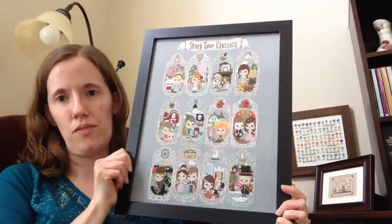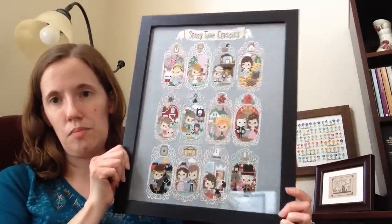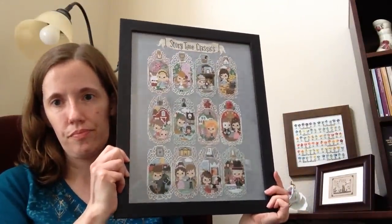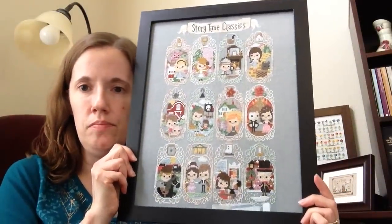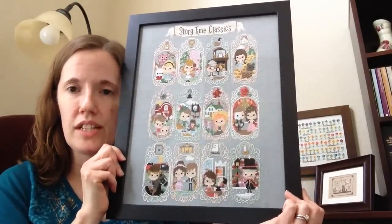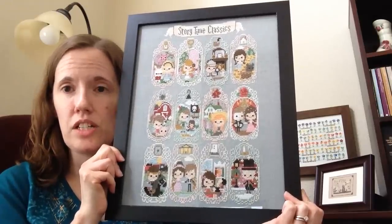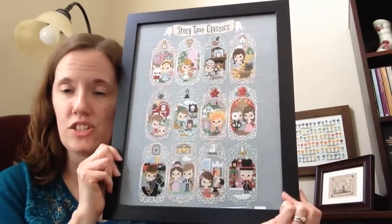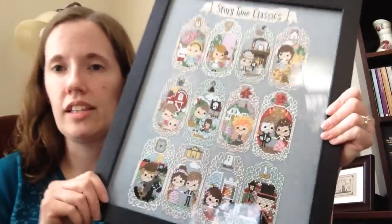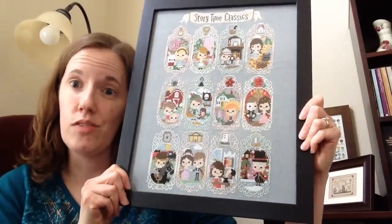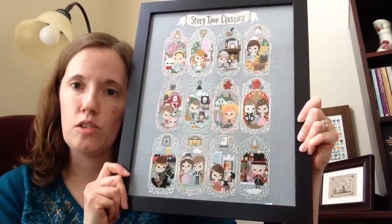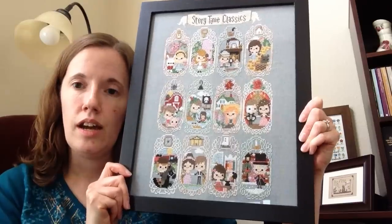Here is Story Time Sampler. This is an eleven by fourteen in the same brand and the same dark black wood grain look that my fairy was in. This is on 32 count Luna Blue MCG textiles linen, and it's uneven. This particular cut is uneven. Some MCG textiles is actually even, but a lot of it is not. And so this particular one is not even, which is why these are a little more elongated than you might have if you're stitching it on an even piece of fabric, but it still fit in this eleven by fourteen.